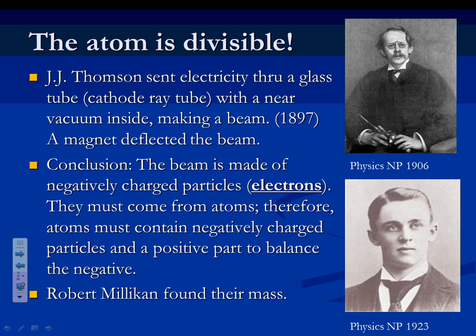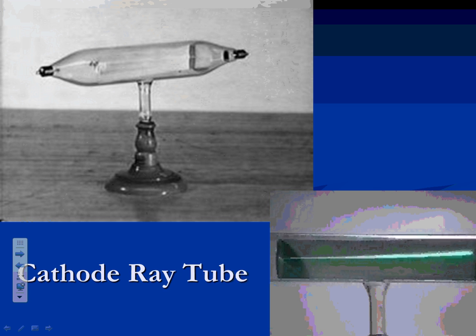A cathode ray tube was a glass tube with very little air inside of it. In the late 1800s, when electricity had just recently been discovered, hooking electricity to it produced a beam going through the tube. When you put a magnet up to the beam, the beam changed direction. Magnets have no effect on light, so if the beam moves under a magnet it means the beam is made of matter — and that matter turned out to be negatively charged. Here's a cathode ray tube: the beam is inside the tube. Hold up the positive end of a magnet and the beam is attracted toward it; hold up the negative end and the beam is repelled. This is how electrons were discovered. The beam is not light — it's made of electrons, which are negative.